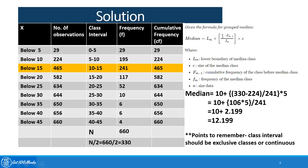One thing to notice here: whatever number of observations are given in the question as 'below 10', 'below 15', and so on, the same numbers will appear in your cumulative frequency column. Because 'below 45' includes everything which is below 45 — all classes below 40, below 35, below 30 — everything is included in that number. That's why the total frequency is 660, and this is the cumulative frequency for the class interval 40 to 45.